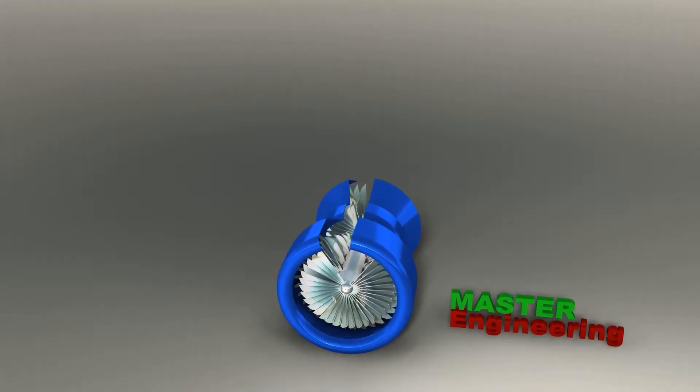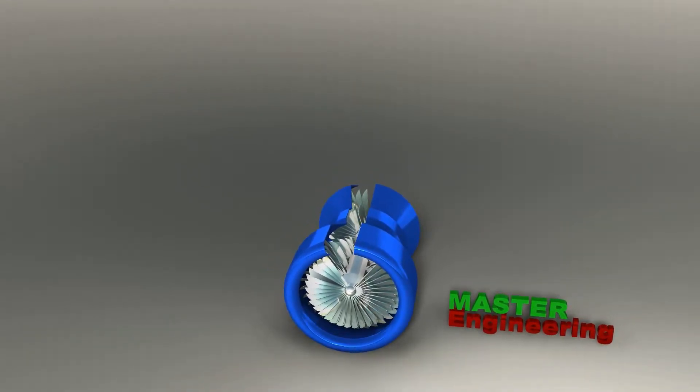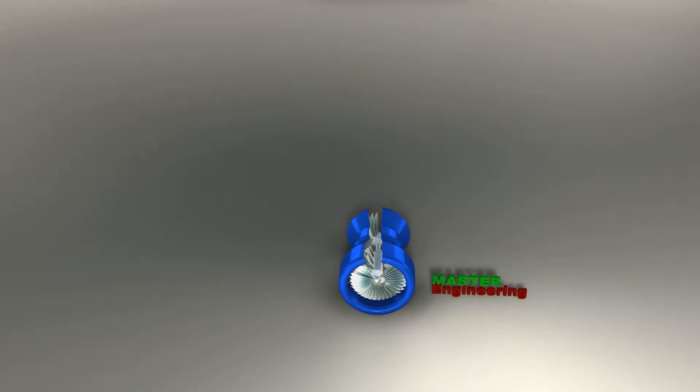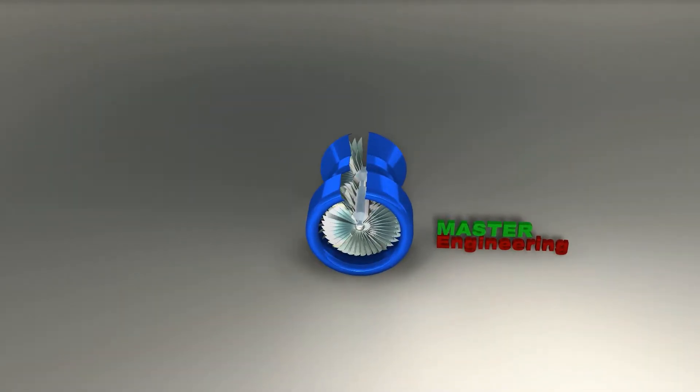The component parts of a turbojet engine are the inlet, the gas turbine engine consisting of a compressor, a combustion chamber and a turbine, and the exhaust nozzle.